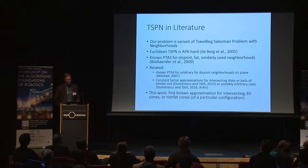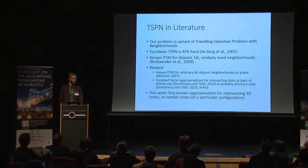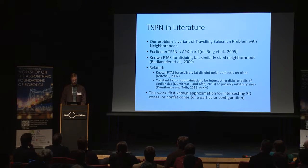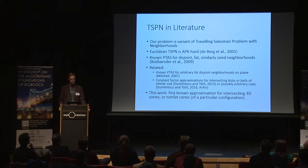This is a variant of the traveling salesman problem with neighborhoods, or TSP-N. TSP is NP-hard, so TSP-N is also NP-hard. TSP-N is actually quite a bit harder than TSP, because even in Euclidean space it is APX-hard — it is proven that there can be no PTAS for it. However, there is a PTAS for disjoint fat similarly-sized neighborhoods, which we can directly apply to this problem if we have fat cones with a wide viewing angle and if they are also disjoint.